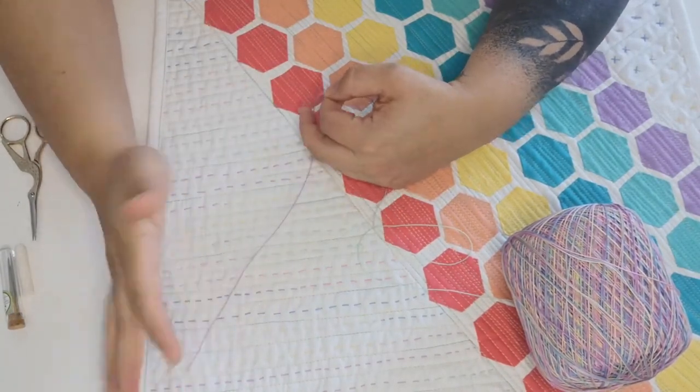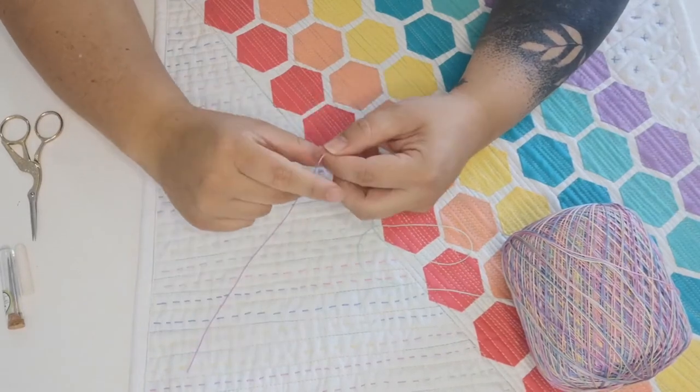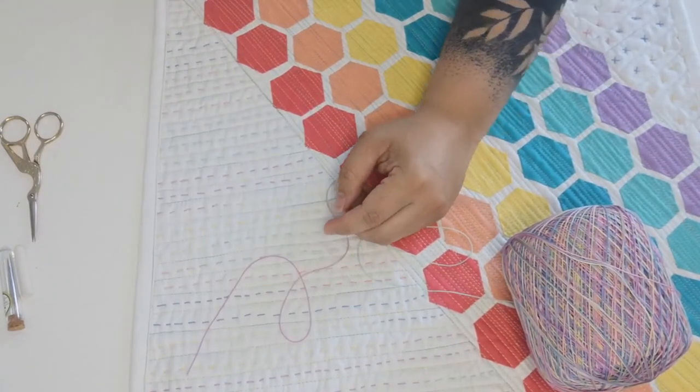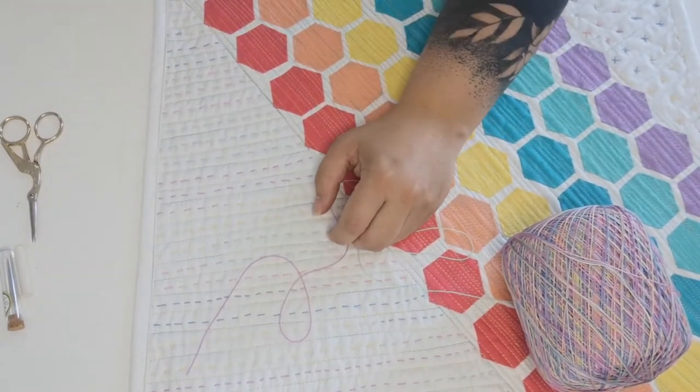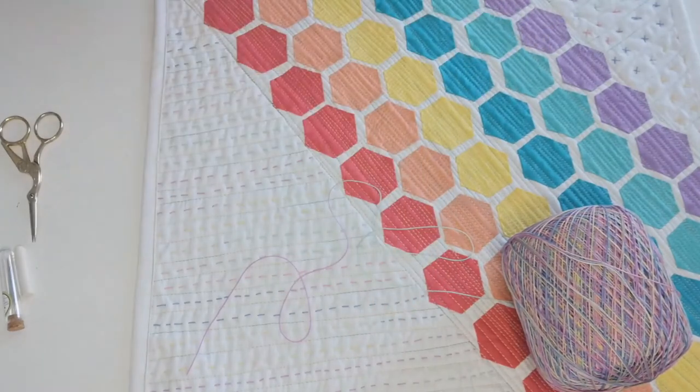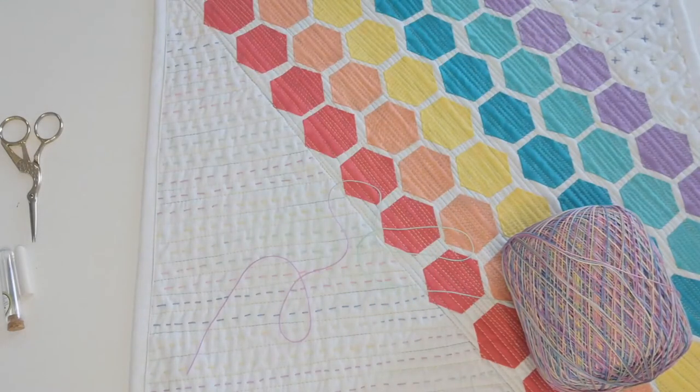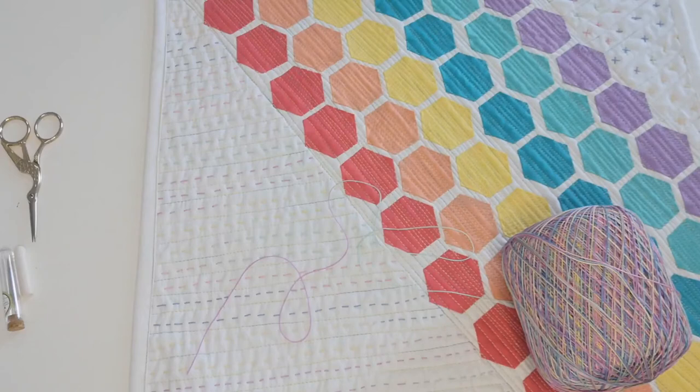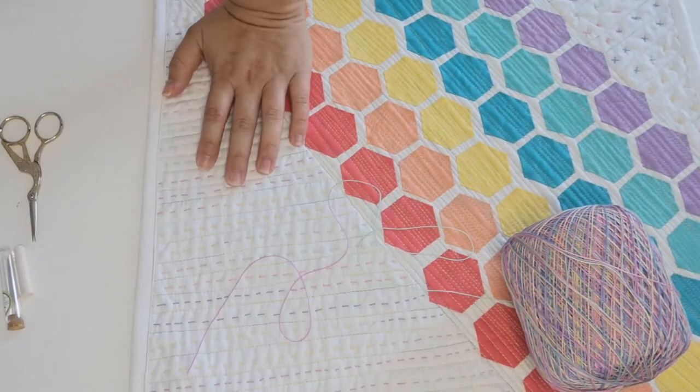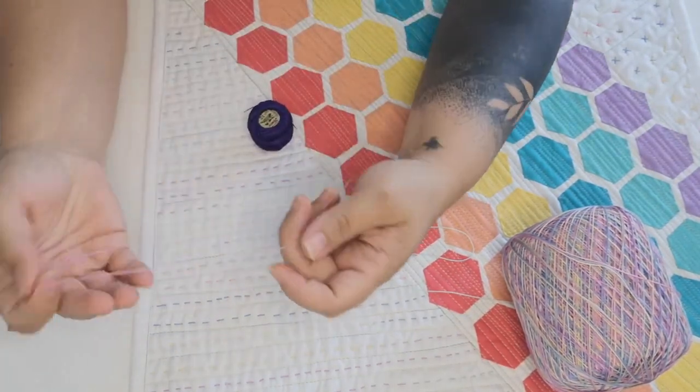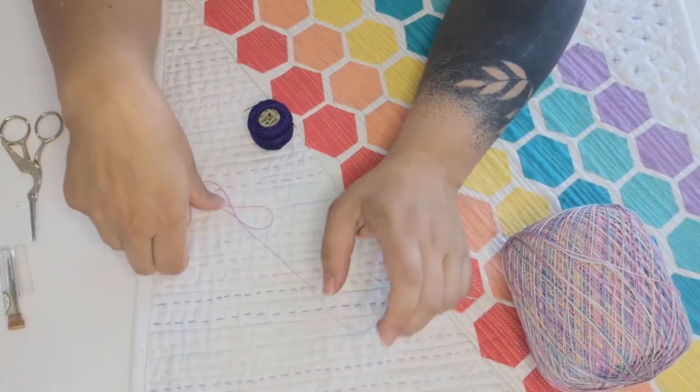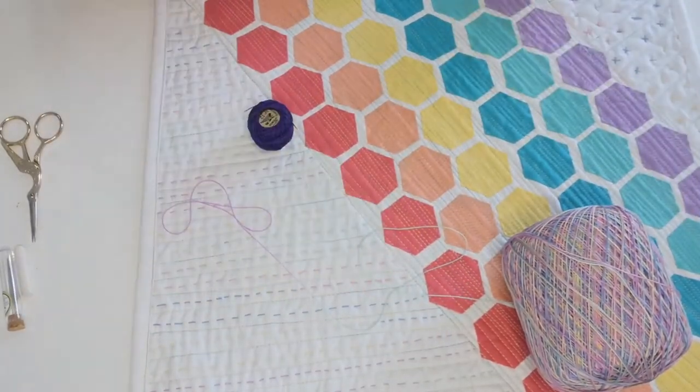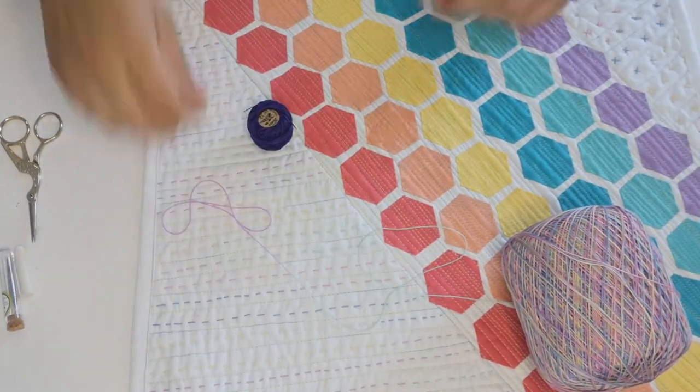For this I used crochet thread which I think is a size 12 if I'm not mistaken. That would be the largest that I would use. This is variegated and it's in all these pastel-y colors which I thought was a really nice complement for it.